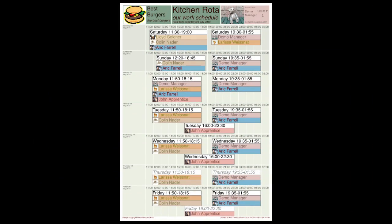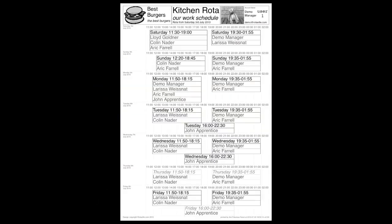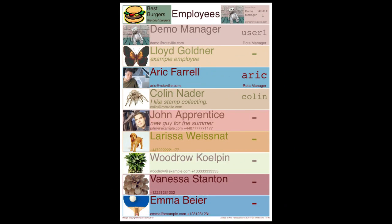Here's a full colour rotor in portrait and full colour in landscape, and here's an example of economy print which uses less ink when printed, and here's an example of the employee contact list.